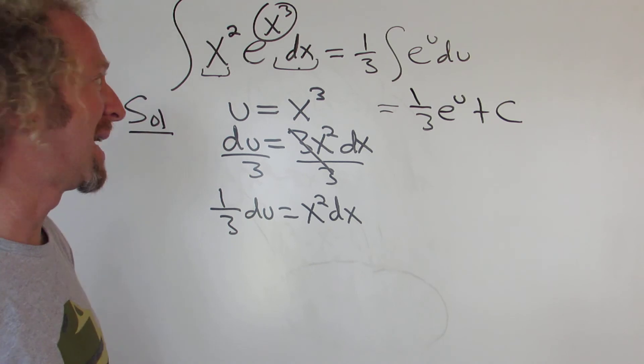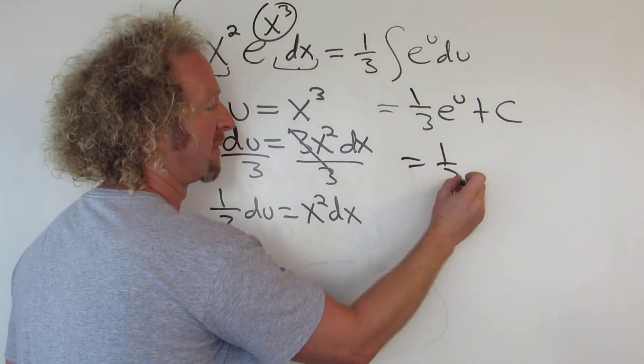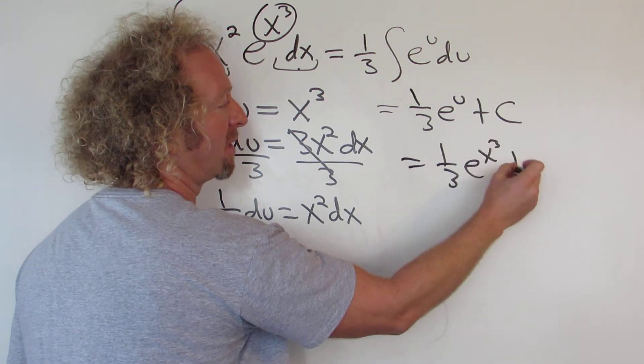And the last thing to do is to go back to x. So u is x cubed. So this is going to be equal to 1 third e to the x cubed, and then plus our constant, C.